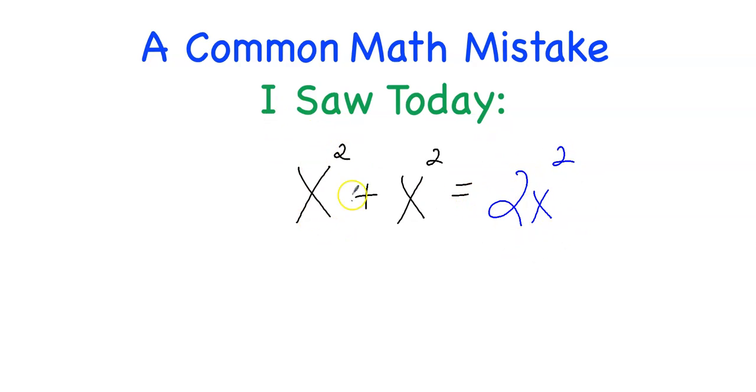Again, just look at it this way. You have an X squared here plus another X squared here, and in total you have two X squared. So this is the answer we would be looking for.